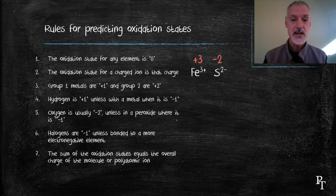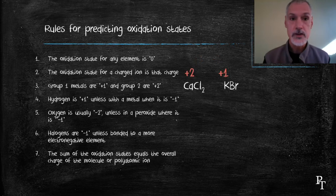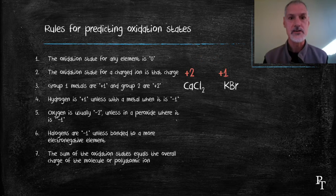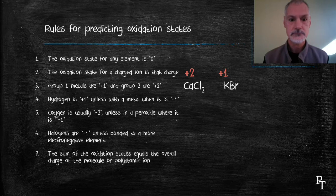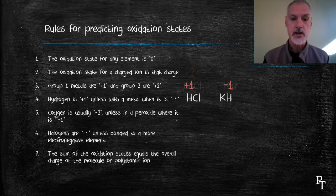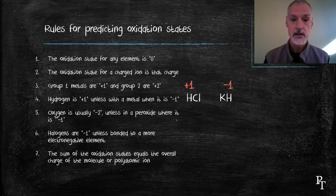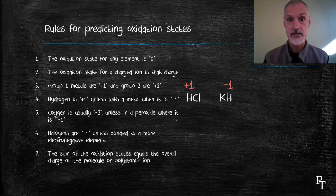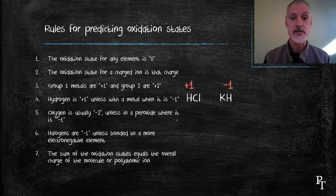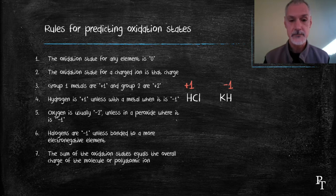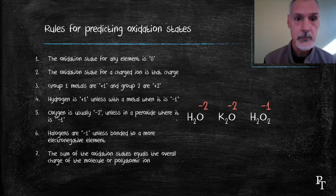Using our periodic table, anything in group one has a charge of plus one. Anything in group two has a charge of plus two. Hydrogen has always got a plus one charge unless it's with a metal. When it's with a metal, the metal donates its electron to the hydrogen. As a result, hydrogen's are minus one with metals, like in this one, potassium hydride.